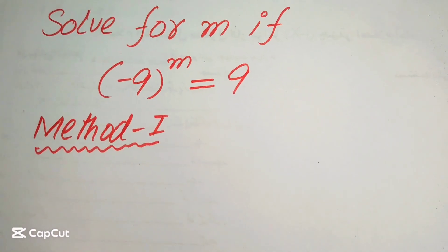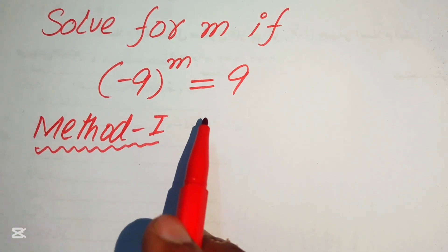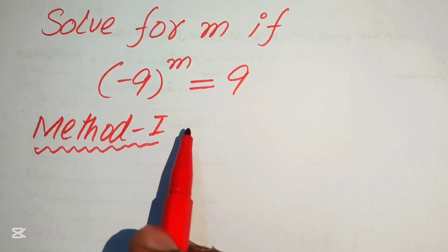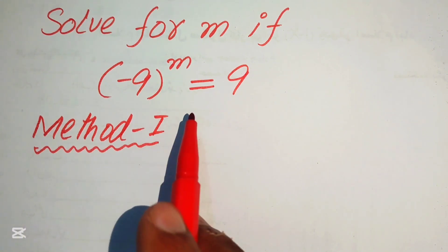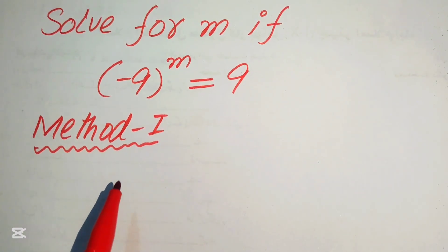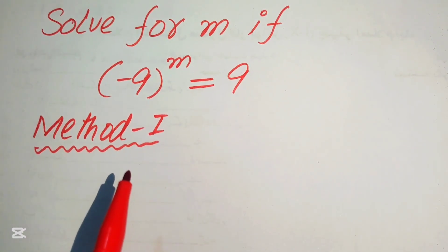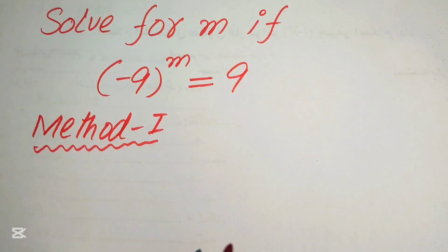Hello everyone, welcome! We will solve this exponential equation problem. We have minus 9 to the power of m equals 9, and we will solve for m. I'll discuss two methods to solve this problem, so please comment which method you like.